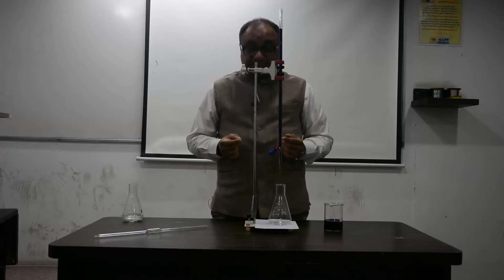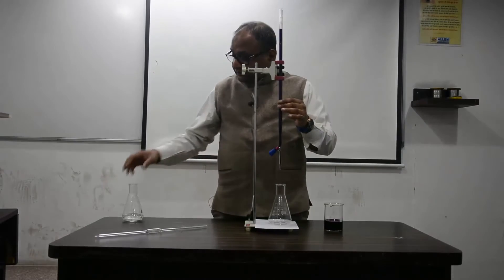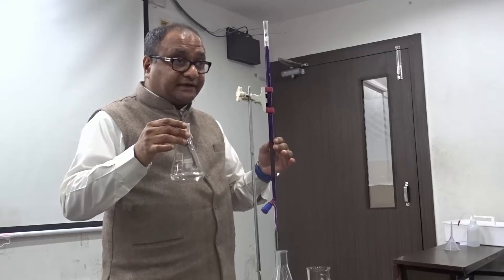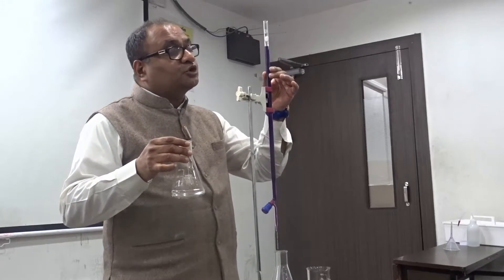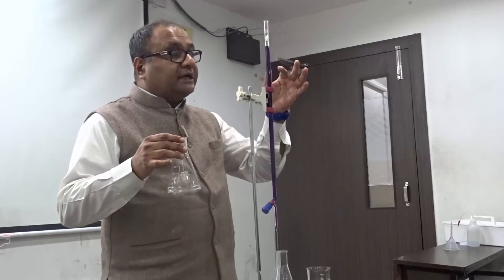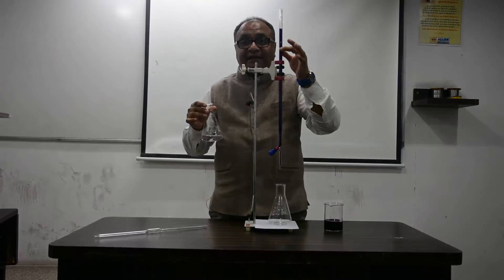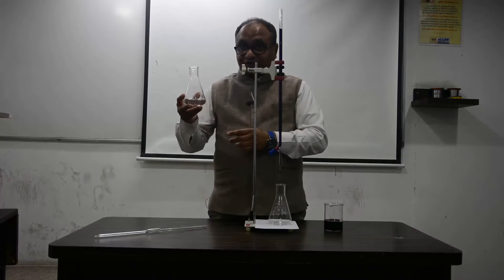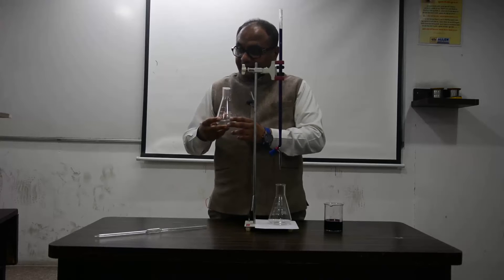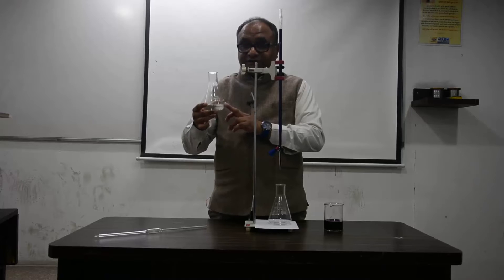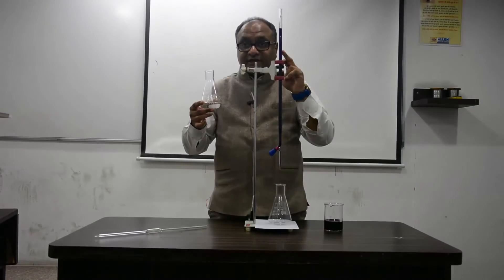Welcome to this video on the titration of KMnO4 with ferrous ammonium sulfate. This is a simple titration between a solution whose concentration is known — the KMnO4 solution at N/10 — and Mohr's salt or ferrous ammonium sulfate·6H2O, whose concentration is unknown. We are going to find out that concentration by doing a simple titration with KMnO4.